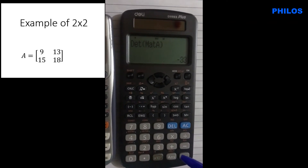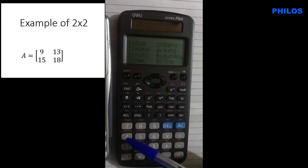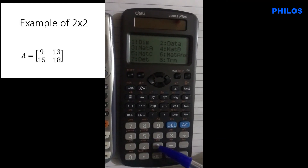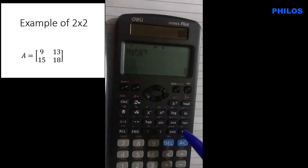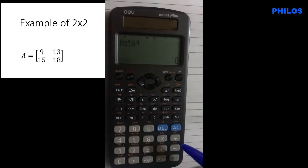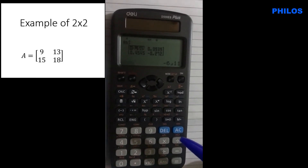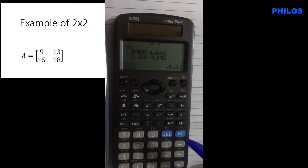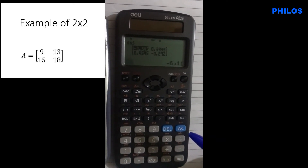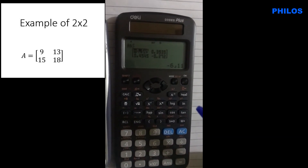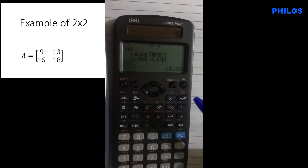To find the inverse, press AC, then Shift, option 4, option 3 for Mat A, then press x^(−1) for the inverse. Press equals to get your answer. The result is: −0.5455, 0.3939, 0.4545, −0.2727. In fraction form the first element is −6/11 and the second is 13/33, and so on.